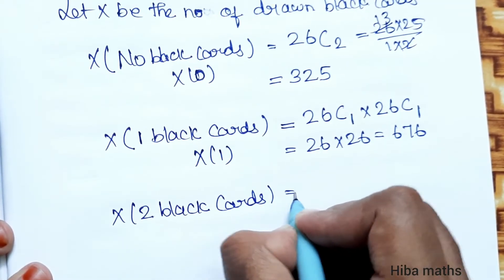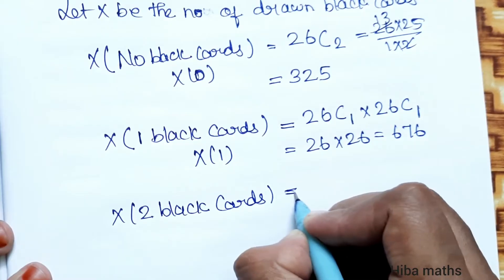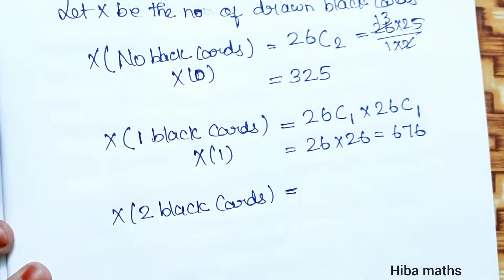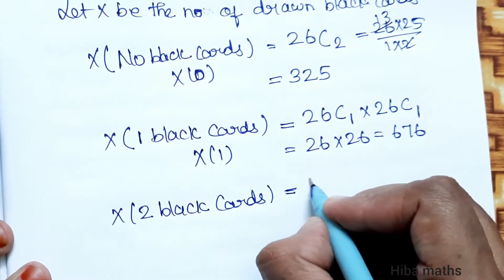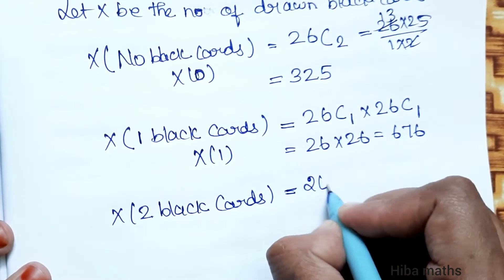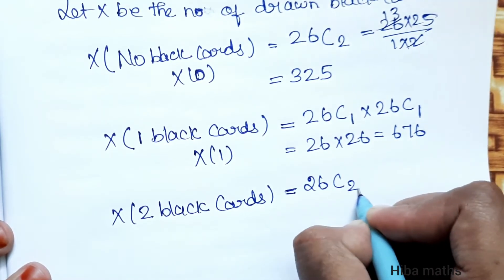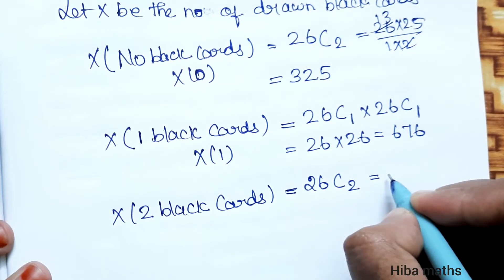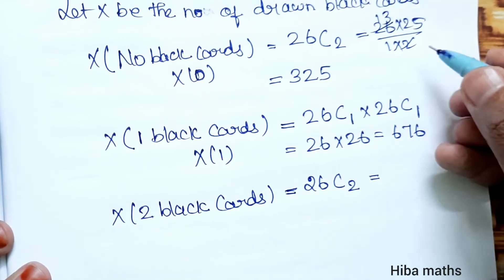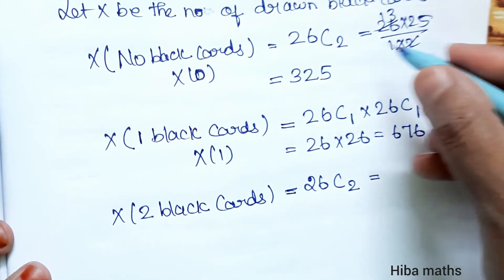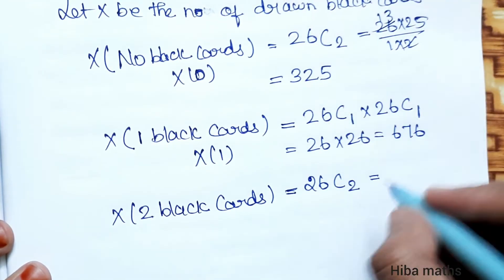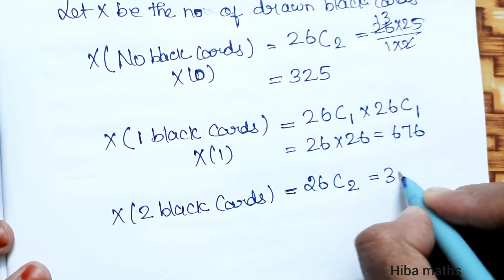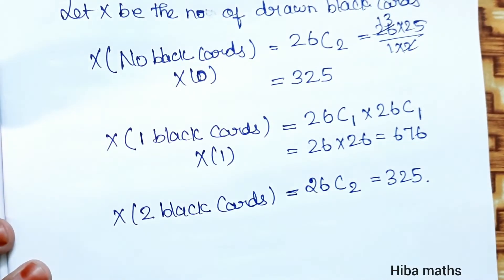For x = 2, two black cards are drawn. We choose 2 from 26 black cards: 26C2 = 325.